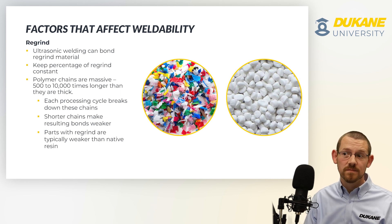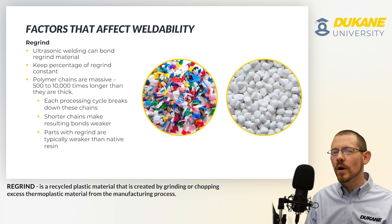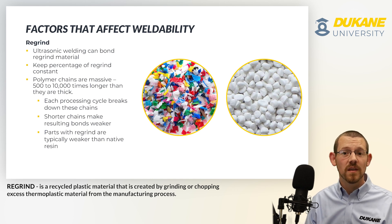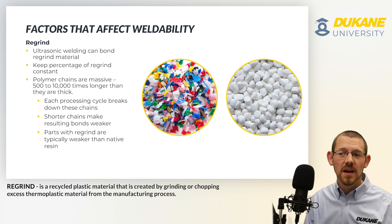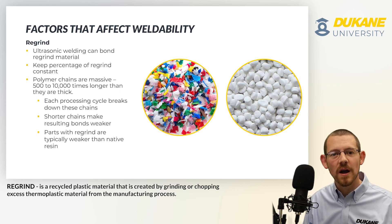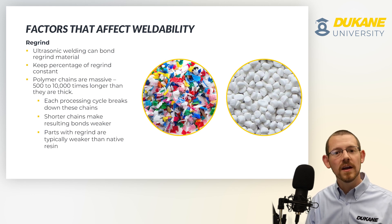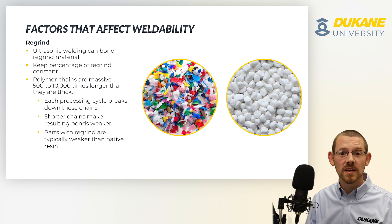Ultrasonic welding is one of the few processes that can actually handle a regrind percentage. The key if you're going to have regrind in your parts is to keep that percentage consistent — we recommend no more than 20%. The reason is that polymer chains are massive, often 500 up to 10,000 times longer than they are thick, but every time you reprocess your polymer, those chains break down and get smaller, degrading physical properties and impacting our ability to consistently weld them. Parts with regrind will have weaker welds, but it is not exclusionary — you can still process them with ultrasonic welding.